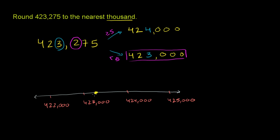And so when we round to the nearest thousand, we have to pick between that and that. And we see it is much closer to 423,000 than to 424,000. So we round it right there. We just use the rules we just came up with, and we round it down to 423,000.